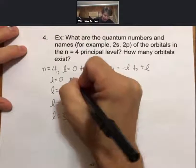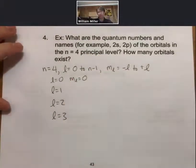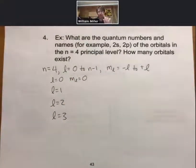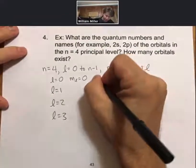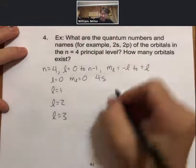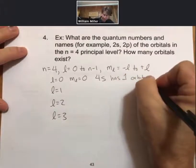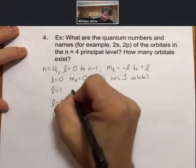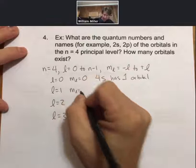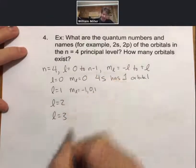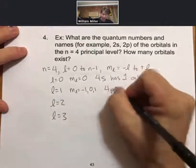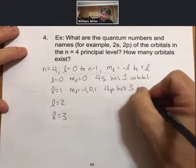And then we said that m sub l equals minus l to plus l. So that's just going to be l equals 0, m sub l equals 0. For l equals 1, m sub l equals minus 1, 0, and 1. So 4p has 3 orbitals.